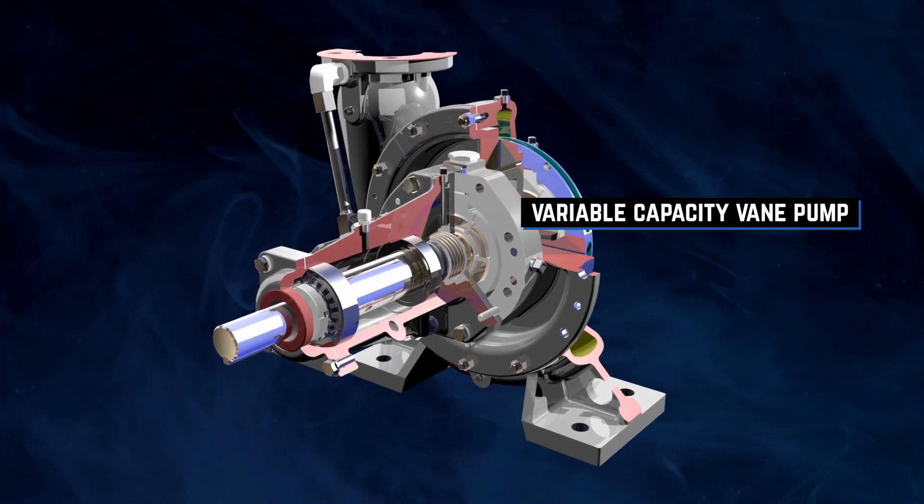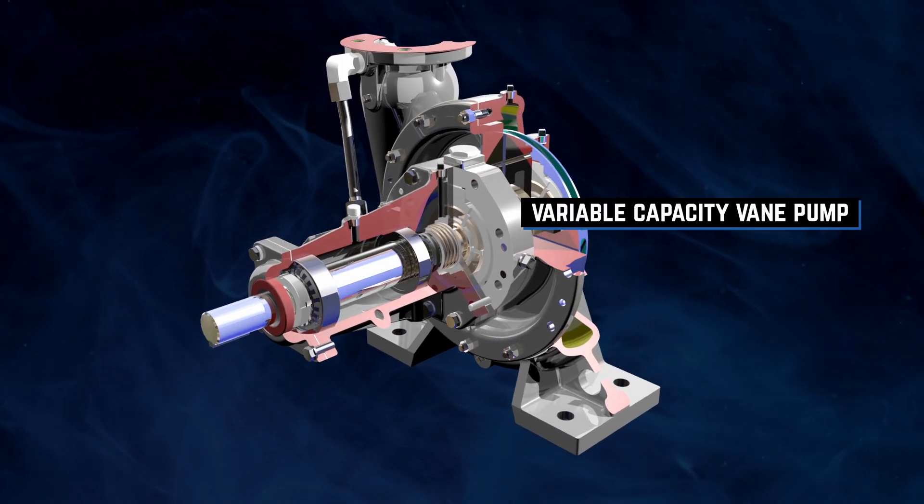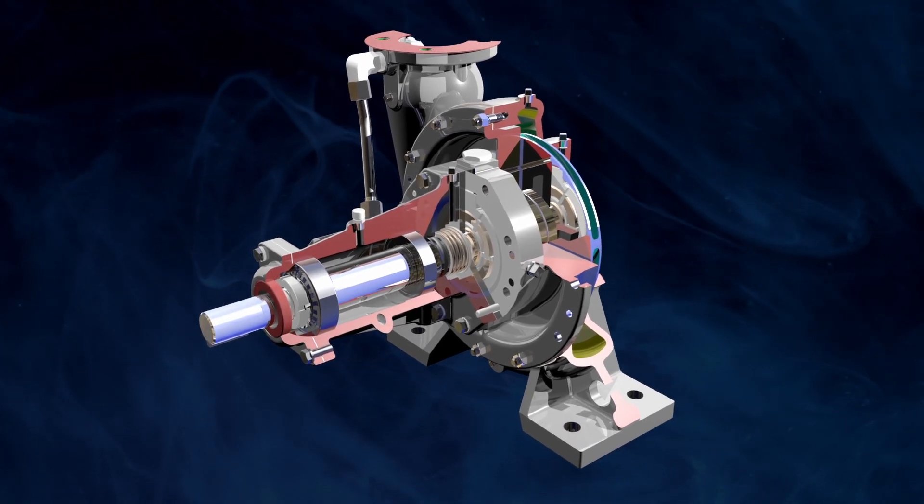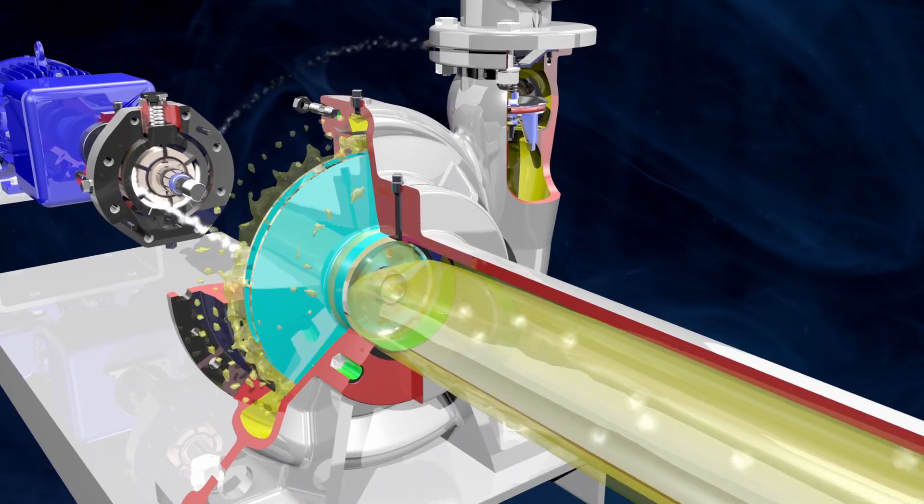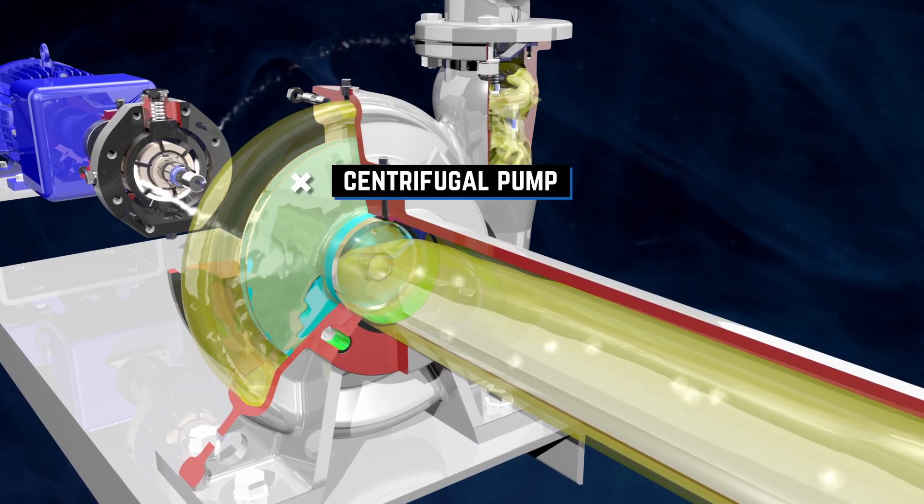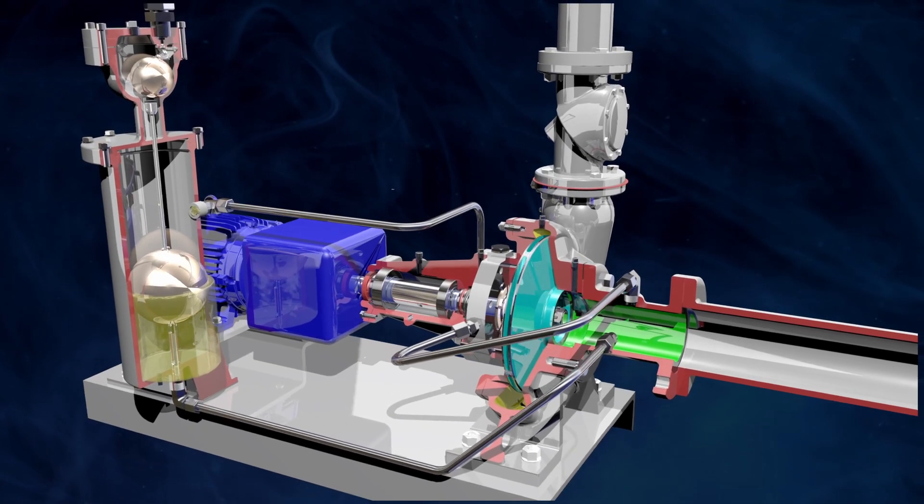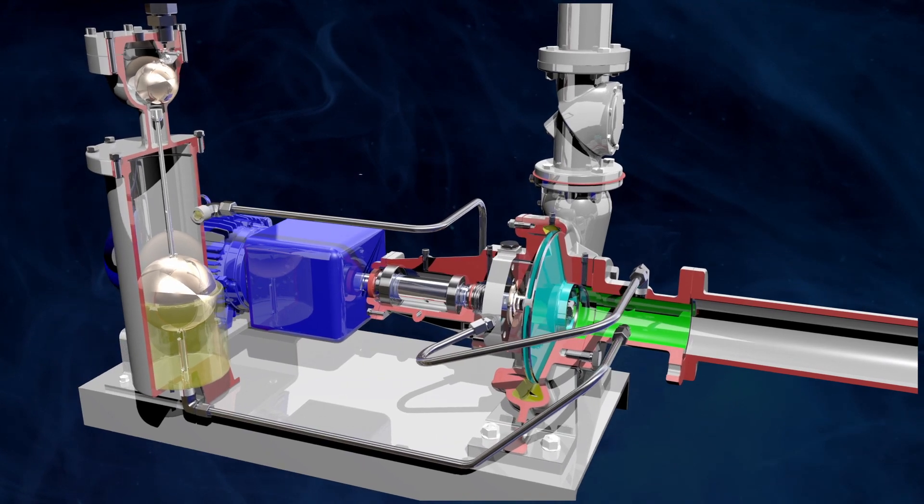A variable capacity vane pump handles the priming cycle, quickly and automatically eliminating air and vapor from the suction line and volute. Once priming is complete, the centrifugal pump takes over, moving liquid efficiently to meet system design requirements.